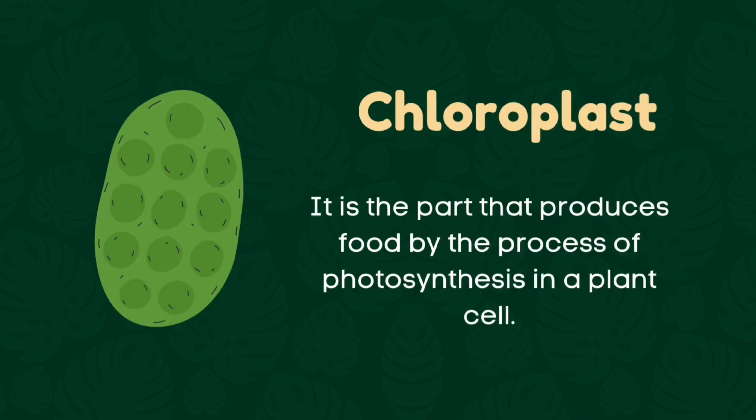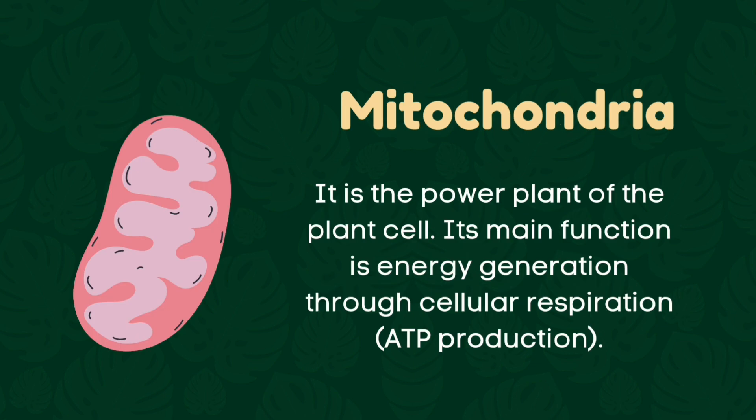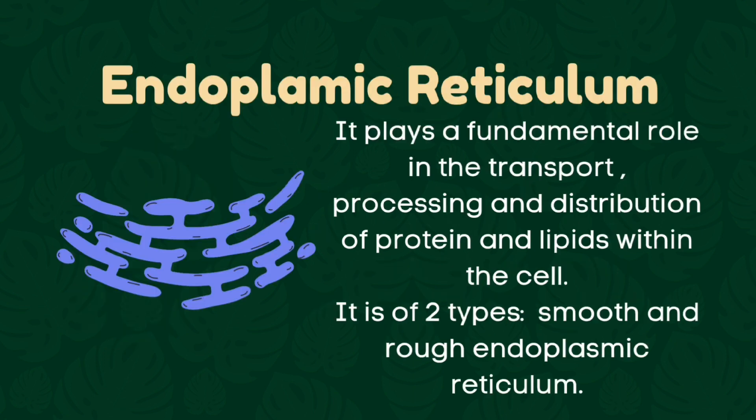Chloroplast: It is a part that produces food by the process of photosynthesis in the plant cell. Mitochondria: It is the power plant of the plant cell. Its main function is energy generation through cellular respiration and ATP production.